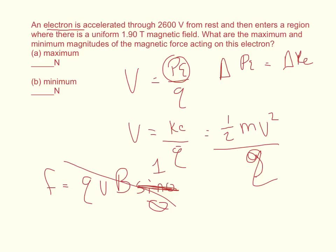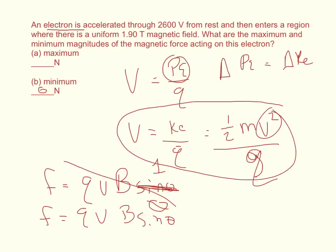We already know our minimum force is going to be zero newtons. But our maximum force, F equals QVB sine theta, we've got to solve for V, the velocity not the volts.